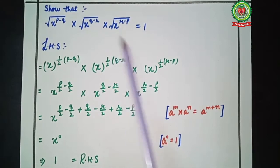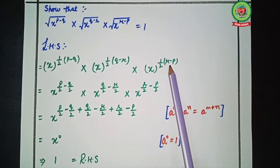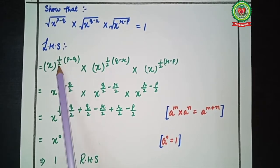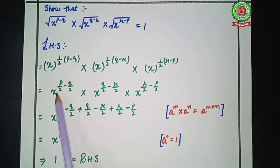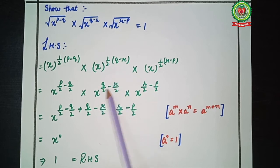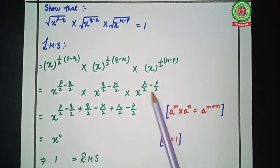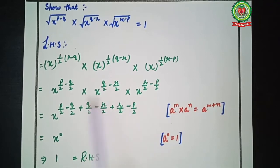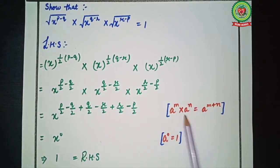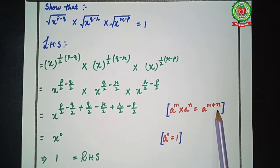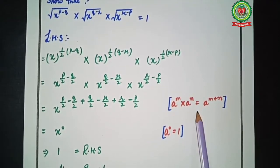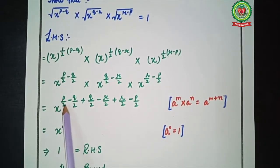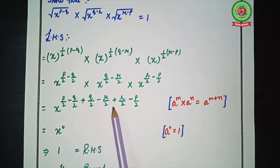We continue: multiplied by x raised to power 1 upon 2, bracket q minus r, multiplied by x raised to power 1 upon 2, bracket r minus p. Now we multiply 1 upon 2 through each bracket, giving x raised to power p upon 2 minus q upon 2, multiplied by x raised to power q upon 2 minus r upon 2, multiplied by x raised to power r upon 2 minus p upon 2. Since x is the base and they are being multiplied, we add their powers: x raised to power p upon 2 minus q upon 2 plus q upon 2 minus r upon 2 plus r upon 2 minus p upon 2.